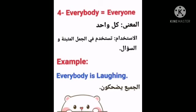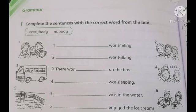Now let's look at everybody or everyone. Both have the same meaning — 'every person' or 'everybody.' When do we use everybody or everyone? We use it in affirmative sentences and questions. Example: everybody is laughing — here you have an affirmative sentence, so we use everybody, meaning all the people are laughing. Everybody or everyone is used in affirmative sentences and in questions.